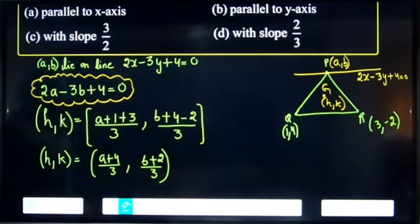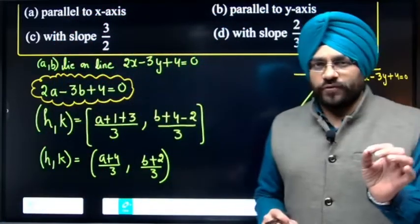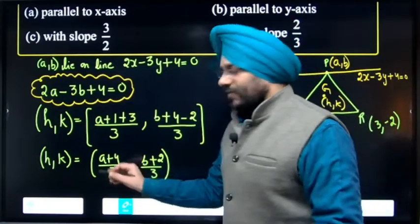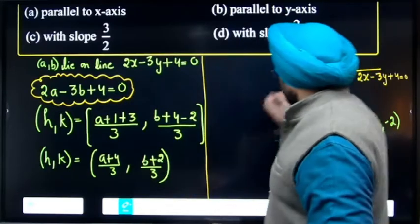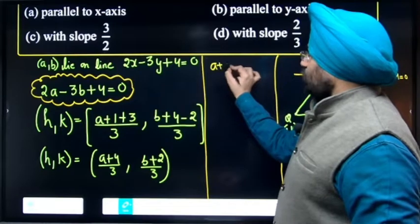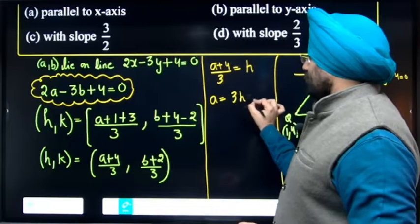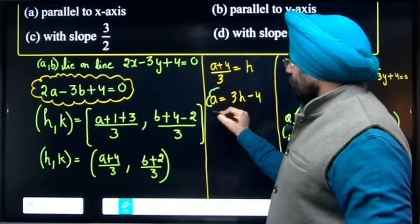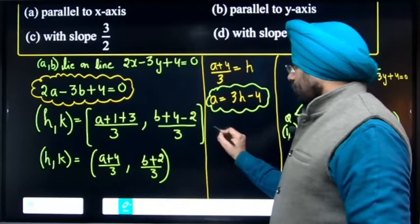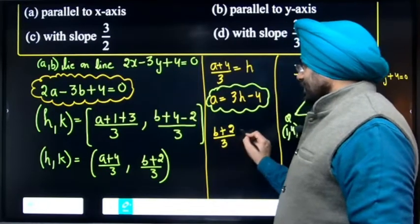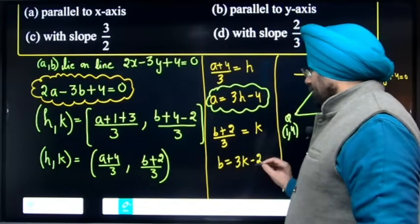Now find the equation of locus in terms of h and k. From the first equation, h = (a plus 4) upon 3, so a = 3h minus 4. Similarly from the second equation, (b plus 2) upon 3 equals k, so b = 3k minus 2. These are the values of a and b.